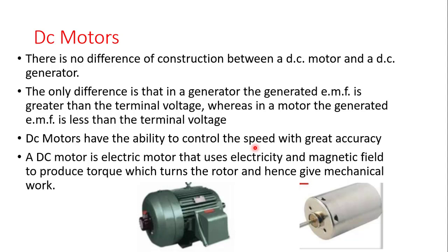Toy cars and robots — before a robot can move, it is a motor that regulates or controls its movement, and they are all DC motors. A DC motor is an electrical motor that uses electricity and a magnetic field to produce torque, which turns the rotor and hence gives mechanical work. For generators we give mechanical energy and get electrical energy as output, but for motors we give electrical energy and get torque, which turns the rotor giving mechanical energy as output.